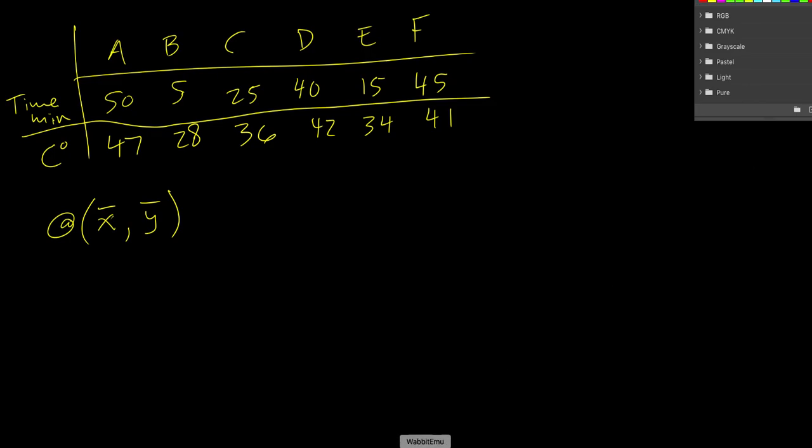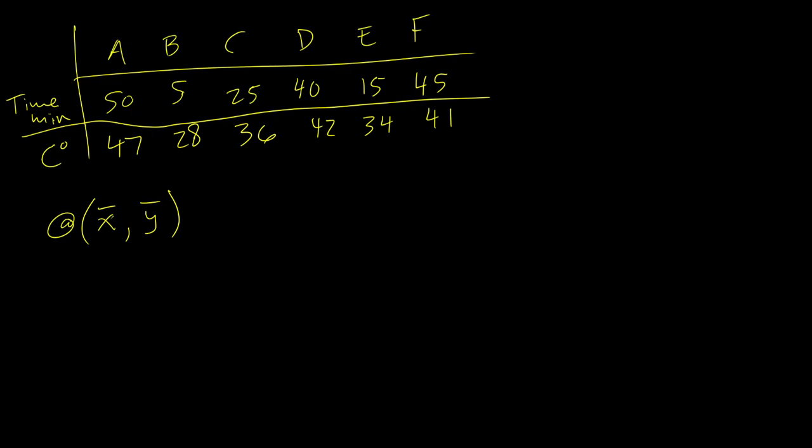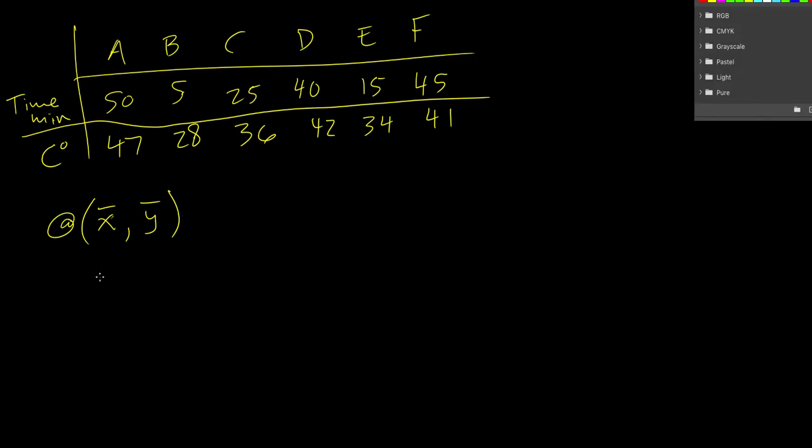Alright, so opening up my calculator, I'm going to just add my x's all together. And there's 1, 2, 3, 4, 5, 6. So if I divide that by 6, I end up with 30. So my x value is 30.